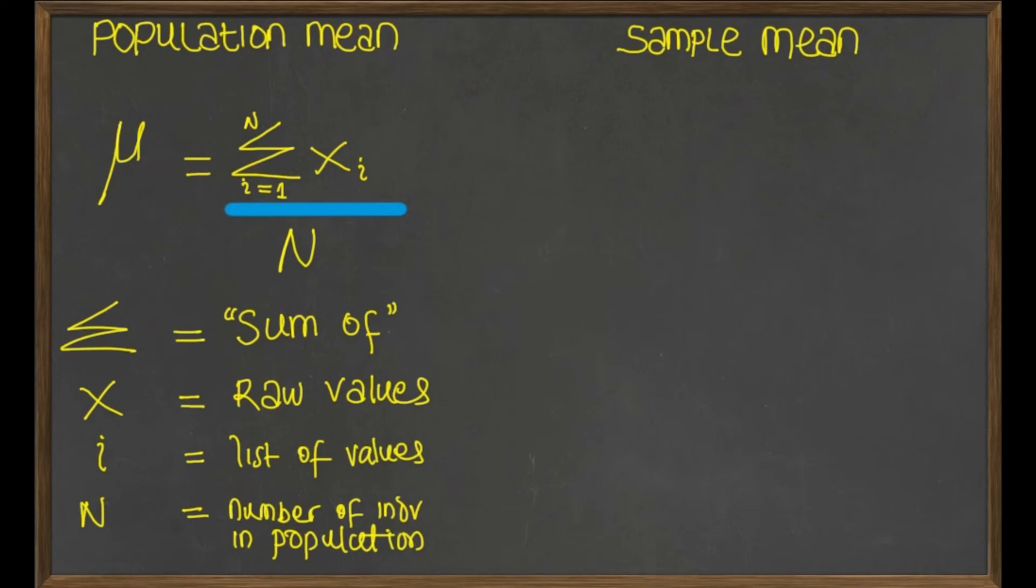This is very similar to the population mean. In the science of statistics, the parameter and the statistic are given different notation. The sample mean is denoted by x bar. And this is equal to sigma x with subscript i and the whole stuff divided by the number of individuals, which is represented as lowercase n for the sample.